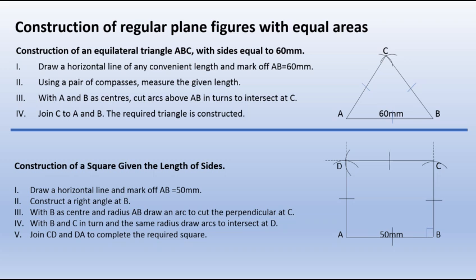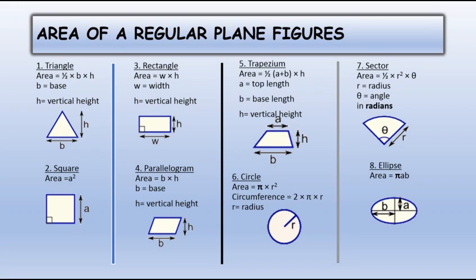Having this understanding, let's look at the areas of regular plane figures. One, the area of a triangle is half base times height, where B is the base and H is the vertical height. Two, the area of a square is A squared, meaning all sides are equal. Three, the area of a rectangle is width times height, where W is the width and H is the vertical height. Four, the area of a parallelogram is B times H, where B is the base and H is the height. Five, the area of a trapezium is half bracket (A plus B) times H, where H is the vertical height.